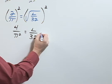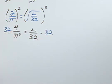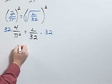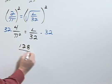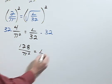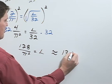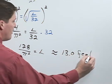Next, we can multiply both sides by 32 so that we have 128/π² = L. This is approximately equal to 13.0 feet.